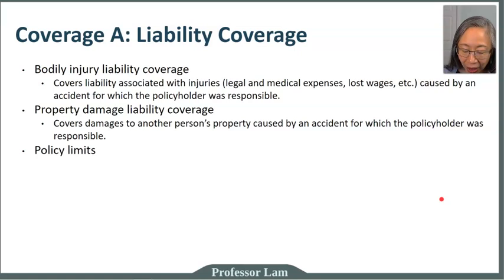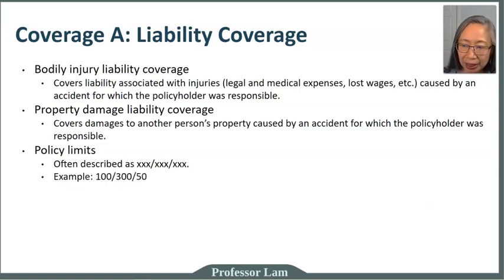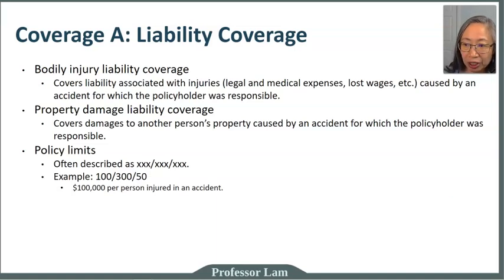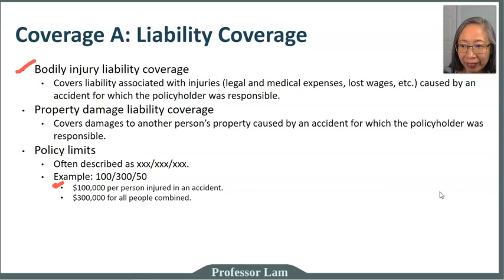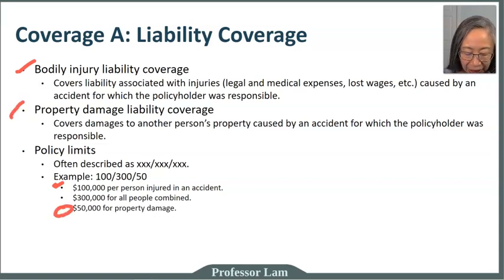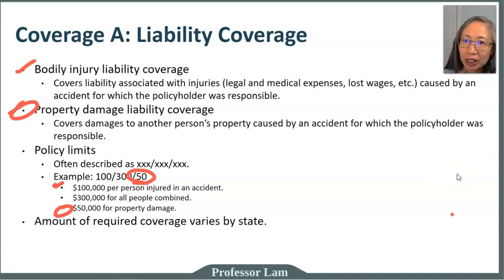When you look at the policy, the coverage is often described in three sets of numbers — for example, 100/300/50. What that means is: one hundred thousand dollars per person injured in an accident — this is the bodily injury liability coverage, so it covers up to $100,000 per person. Three hundred thousand dollars is the combined limit for all people, so if you hit a car with four people in it there is a $100,000 per-person limit and a $300,000 combined limit. The last number, 50, represents property damage, meaning $50,000 for property.